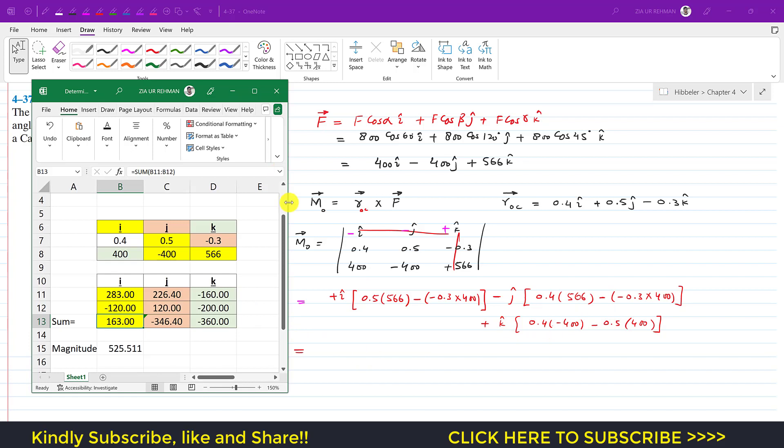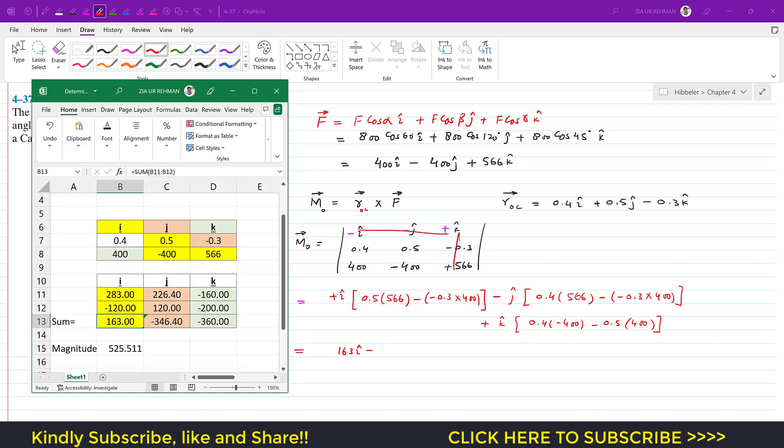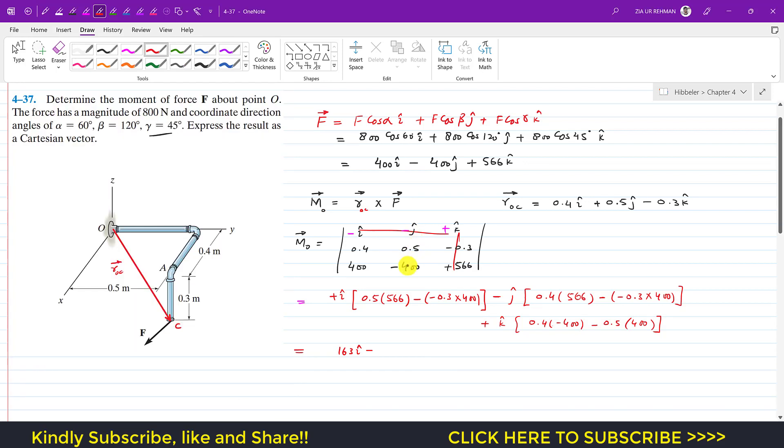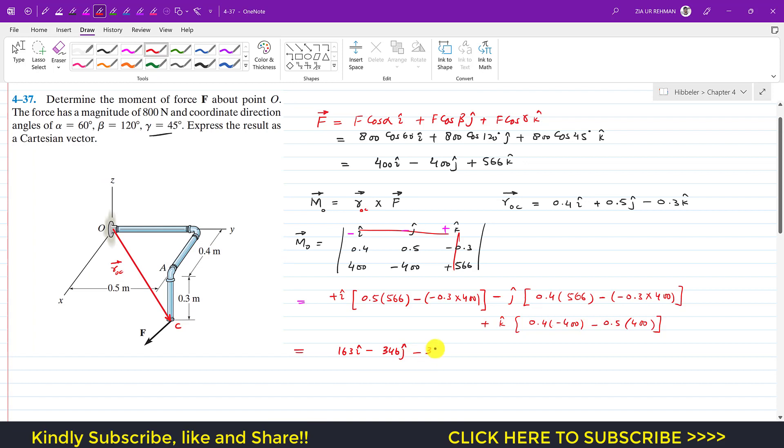So we can write that minus 163i, and then this is minus 346j, and this is minus 360k. So this is the moment about O due to that force having this alpha, beta, and gamma.